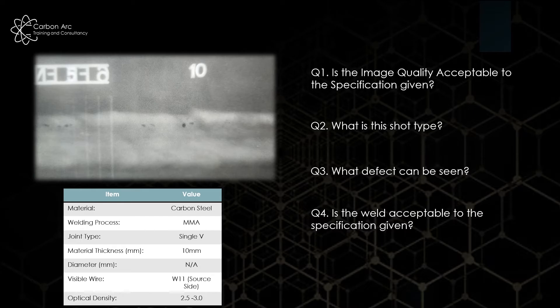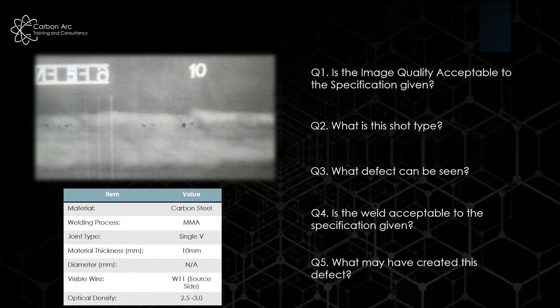Is this weld acceptable or not? Again, you'd go back to your specification and decide based on your acceptance criteria. Then for the welding process question — what may have created this defect? You'll get a few multi-choice options such as poor welder technique, incomplete cleaning, or damp electrodes, and you pick the best one.